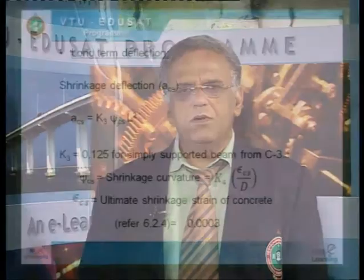The long term deflection consists of two parts: one is the deflection due to shrinkage, and the other is due to creep. Whenever any material shrinks, there will be some deflection, and this occurs over a long time — therefore it is known as long term deflection. Shrinkage deflection as per appendix C is given by the formula: Δ_cs = K3 × ψ_cs × L².